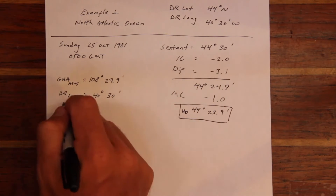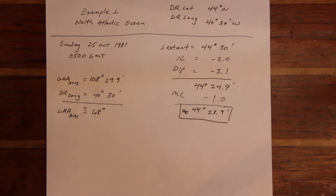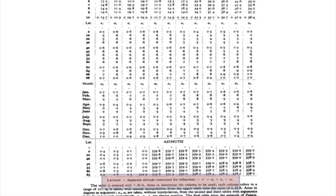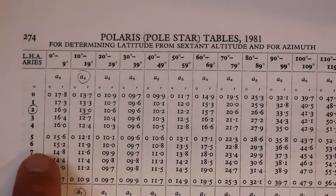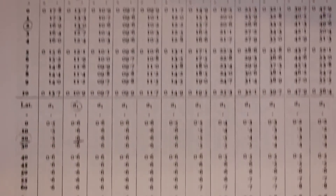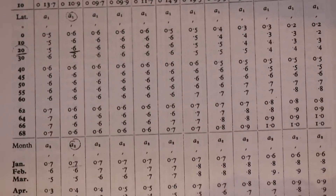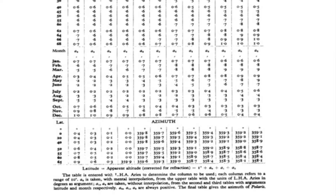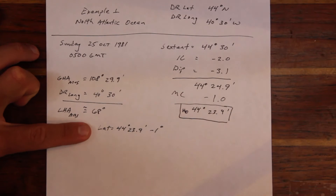In this example, it's sufficient to estimate the LHA of Aries. The formula for determining latitude by Polaris is listed at the bottom of the Polaris tables, and it involves three corrections labeled A0, A1, and A2. The A0 correction is taken from the LHA of Aries. The A1 correction is given for the approximate latitude. The A2 correction is based on the month of observation. All these corrections have to do with the location of Polaris in the sky. After that, it's simply a matter of applying the corrections to the observed altitude to determine your latitude.